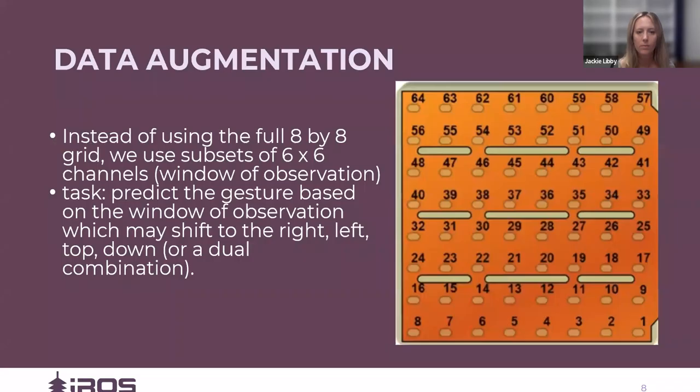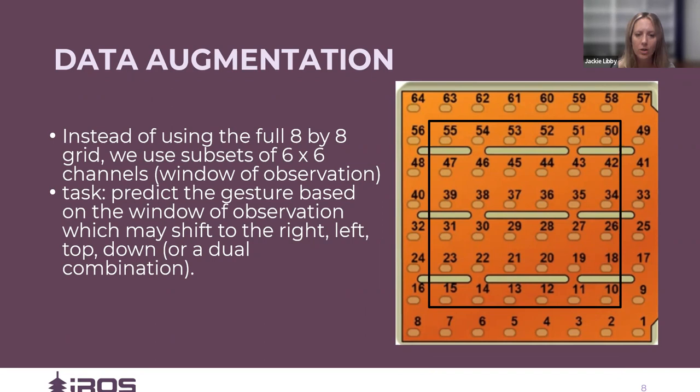We cut these streams up into 200 millisecond overlapping short windows. In order to augment the input space, instead of using the full 8x8 grid, we use subsets of 6x6 channels, which we call the window of observation. The task is then to predict the gesture based on this window of observation, which may shift to the left, right, top, or down. These shifts resemble electrode shifts, and they augment the input space.